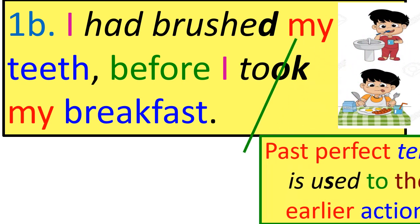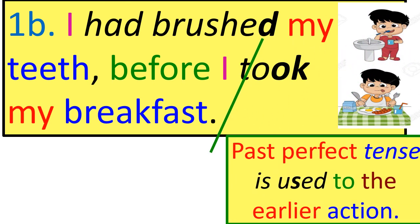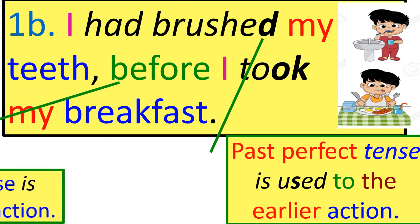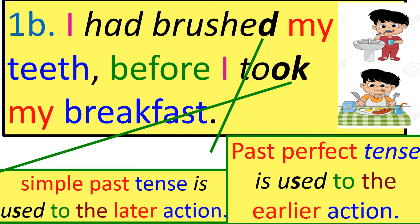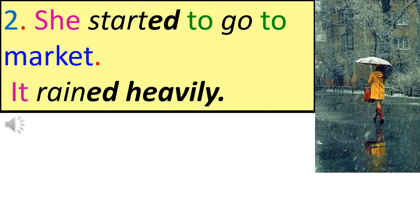Past Perfect Tense is used for the earlier action; Simple Past Tense is used for the later action. When two actions occur nearly simultaneously in the past, both are expressed in the Simple Past Tense — exceptional case.